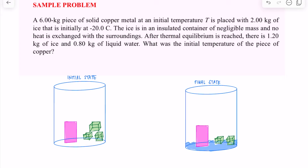After thermal equilibrium — meaning your ice, copper, and water all have the same temperature — there is now 1.20 kilograms of ice. So from 2 kilograms, you now have 1.20 kilograms of ice and the remaining 0.80 kilograms is now in its liquid form.